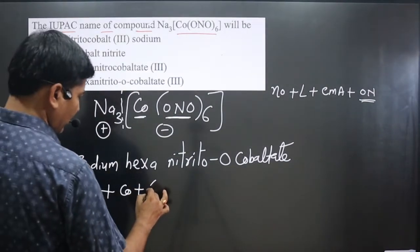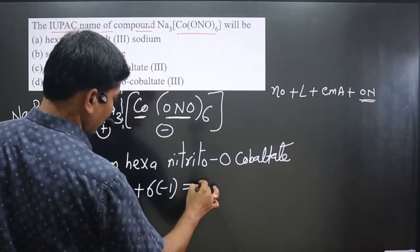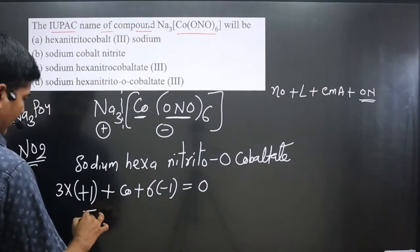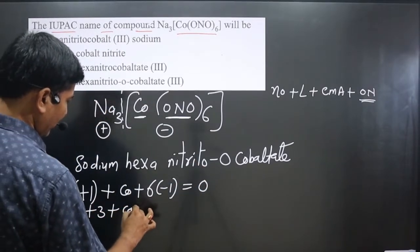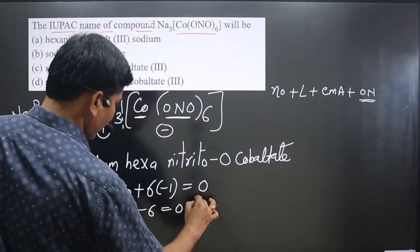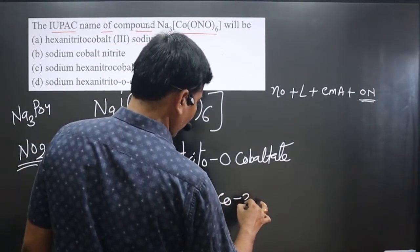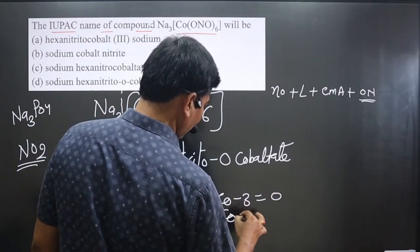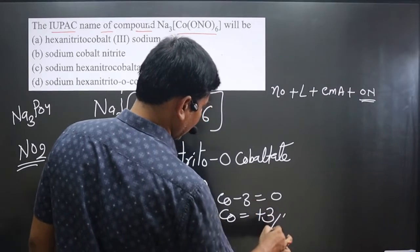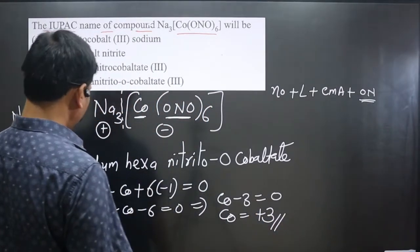It is a neutral complex equal to zero. Simplifying: 3 + Co - 6 = 0, then Co - 3 = 0. Cobalt is present in a +3 oxidation state, and we have to write 3 in Roman numerals.